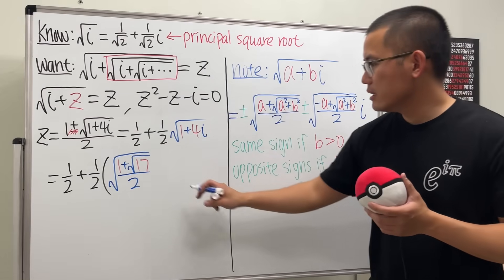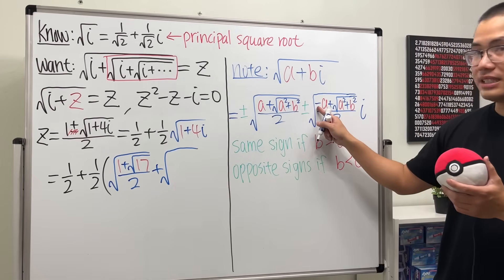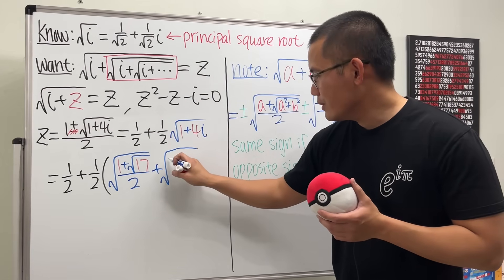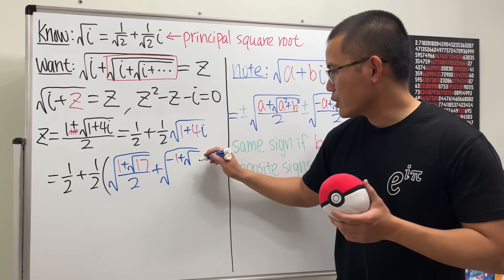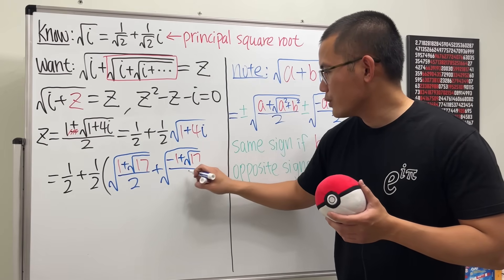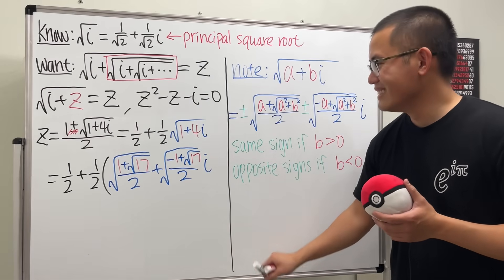And then we add, the second part is pretty much the same thing, except for we have this negative here. So let me put that down. Negative a, which is 1. And then we add the same square root of 17 over 2. And then put down the i. And that's pretty much it.